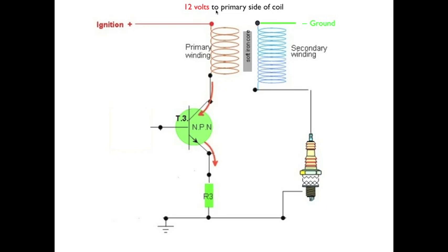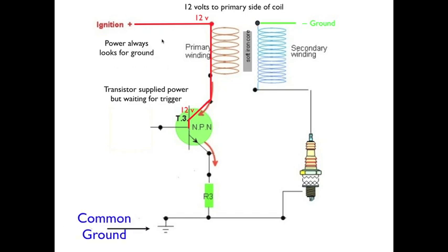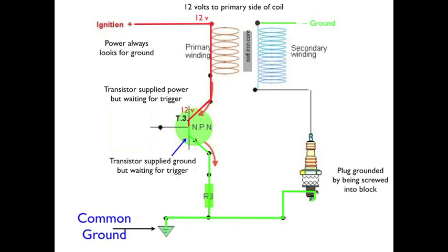We have 12 volts to the primary side of the coil. So that voltage is going to travel down to the resistor and wait at the gate. It can't make it through because the gate is closed. The transistor is supplied power but it's waiting for a trigger and the PCM is going to supply the trigger. Power is always looking for ground. So we have a common ground that is going to share the signal. It's going to split off and go up to the transistor and so we're going to have the transistor ground waiting at the gate. It's supplied ground but it's waiting for a trigger signal. Now we also have ground coming over to the spark plug and the spark plug is going to be grounded by being screwed into the block.